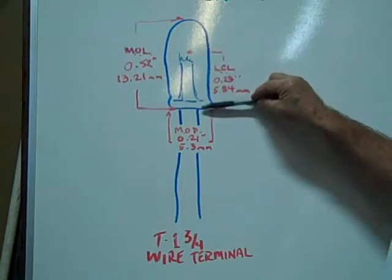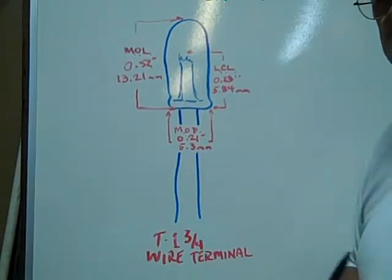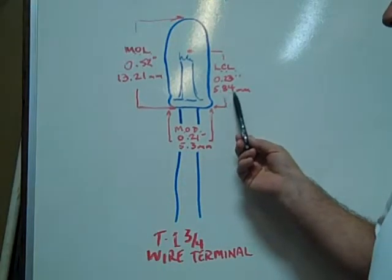The light center length is 0.23 inches, 5.84 millimeters.